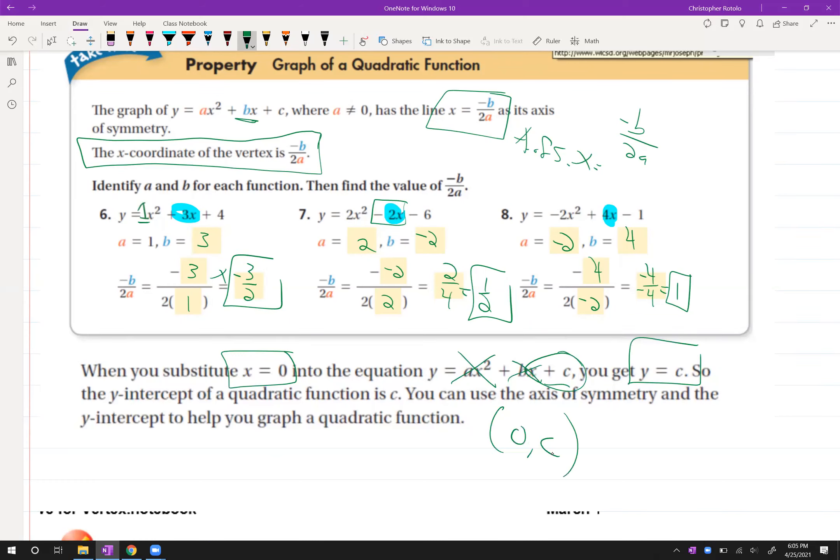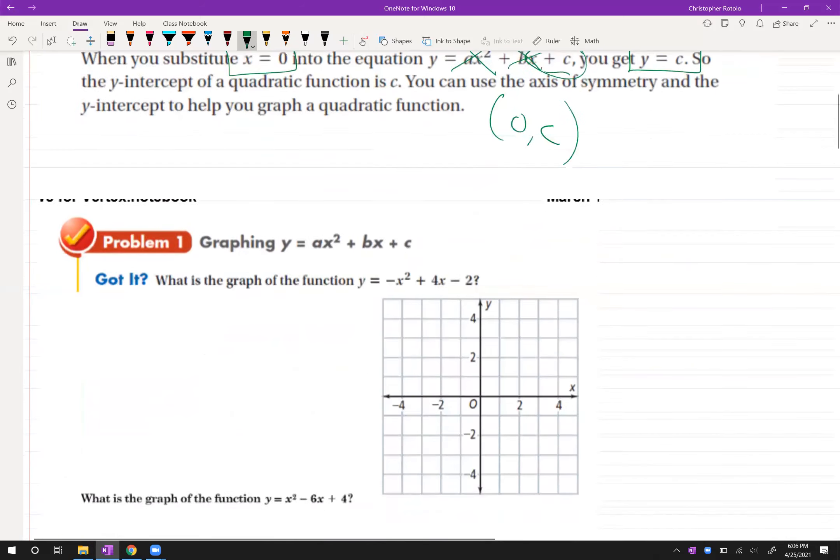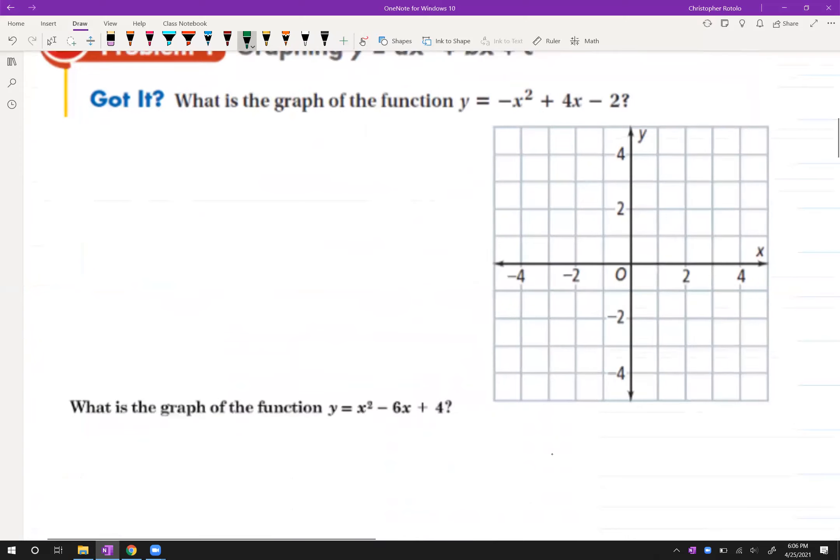So this number on the end is always going to give me 0 C. So I can find the axis of symmetry. I can use the A value as a graphing pattern, and I can use the Y-intercept, and I can graph all of these super duper easy without having to rearrange too much. So let's give it a try here.